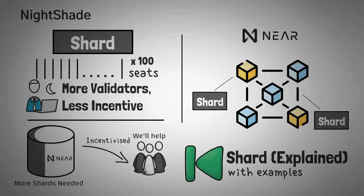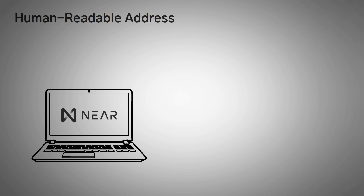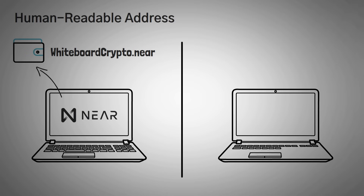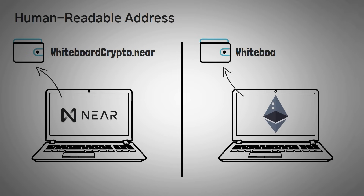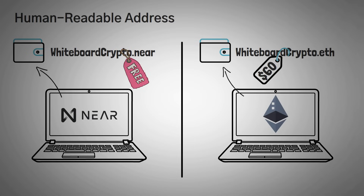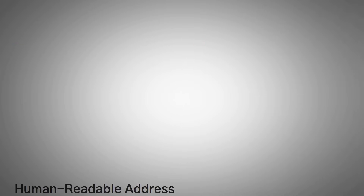One thing to break the technicality of it all is that NEAR actually has human-readable addresses by default. Basically, this means you can have an address like whiteboardcrypto.near. Now Ethereum has something similar — for example, we actually own whiteboardcrypto.eth — but we had to set it up and pay around $60 to reserve it, while NEAR automatically gave us whiteboardcrypto.near. This is a big deal when it comes to getting everyday people onto the crypto train.